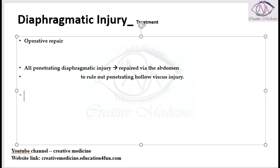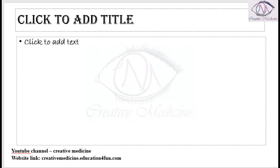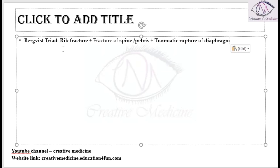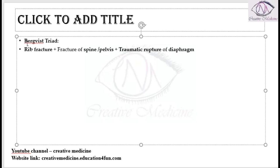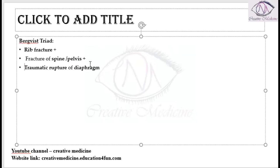A triad is associated with diaphragmatic injury known as Bergwist triad. It contains three components: rib fracture, fracture of the spine and pelvis, along with traumatic rupture of the diaphragm.